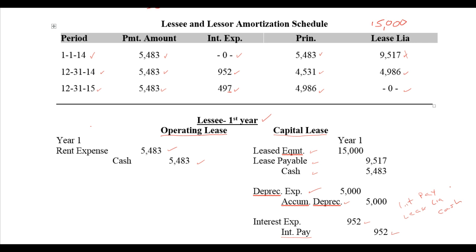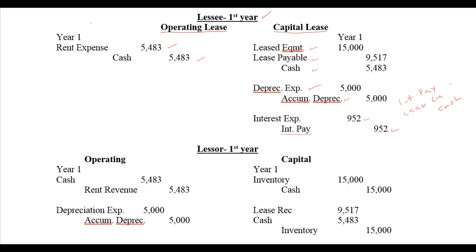Using that same amortization schedule, let's look at the accounting for the lessor. For the lessor under an operating lease, the entries mirror what the lessee did — except instead of paying cash they receive cash, and instead of rent expense they pick up rent revenue of $5,483. There's symmetry — it's the other side of the transaction. Since the lessor owns the equipment under an operating lease, they also maintain depreciation.